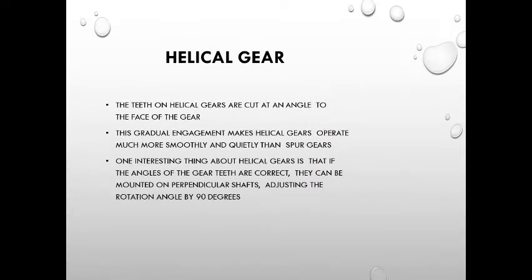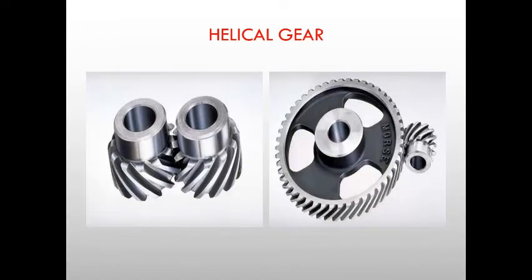Helical gear. The teeth on helical gears are cut at an angle to the face of the gear. This gradual engagement makes helical gears operate much more smoothly and quietly than spur gears. One interesting thing about helical gear is that if the angles of the gear teeth are correct, they can be mounted on perpendicular shafts, adjusting the rotating angle by 90 degrees. The teeth are in a curved manner, producing more contact area. The main advantage is that due to more contact area, it can transfer more load compared to spur gear. The disadvantage is it will have some axial thrust.